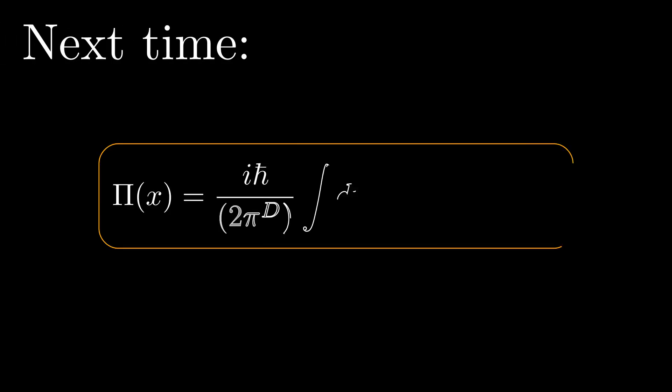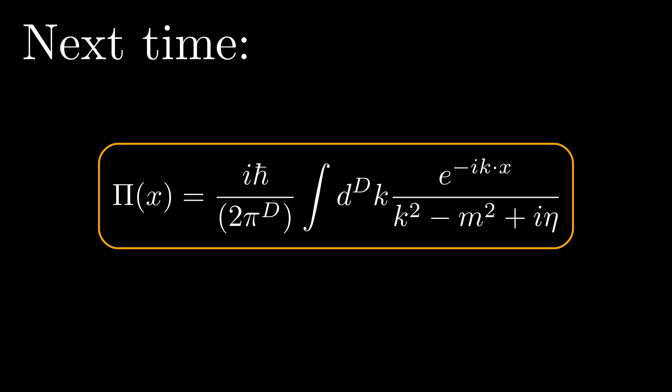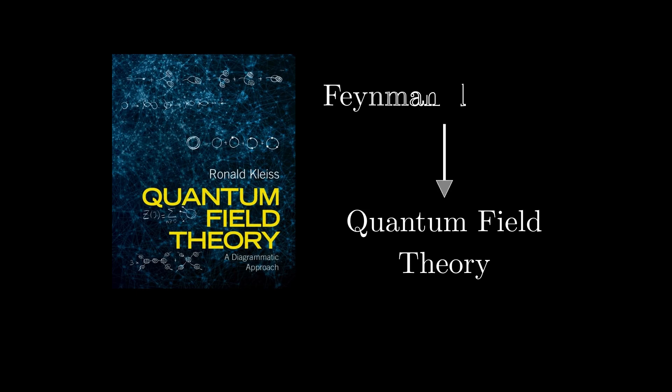As promised, I will let this information sink in a little, while I work on my next video where we will derive the propagator of a scalar field in 4-dimensional spacetime. I based most of the information in this video on the fantastic textbook Quantum Field Theory A Diagrammatic Approach by Ronald Kleiss. In this book, quantum field theory is derived using the intuitive Feynman diagram notation, and I highly recommend buying it if you want to learn quantum field theory in a clear and concise way. I put a link to the book in the description. For now thanks for watching, and I will see you in the next video.